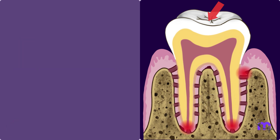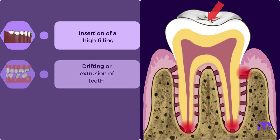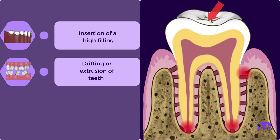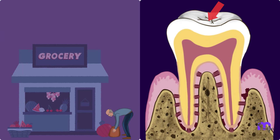In primary trauma from occlusion, the abnormal force is the primary etiologic factor, which may be caused due to insertion of a high filling, drifting or extrusion of teeth into the edentulous areas, and functionally unacceptable orthodontic tooth movement. The older man's situation can be compared to secondary trauma from occlusion, where the tooth is unable to take up normal forces falling onto it as it is weakened due to bone loss.